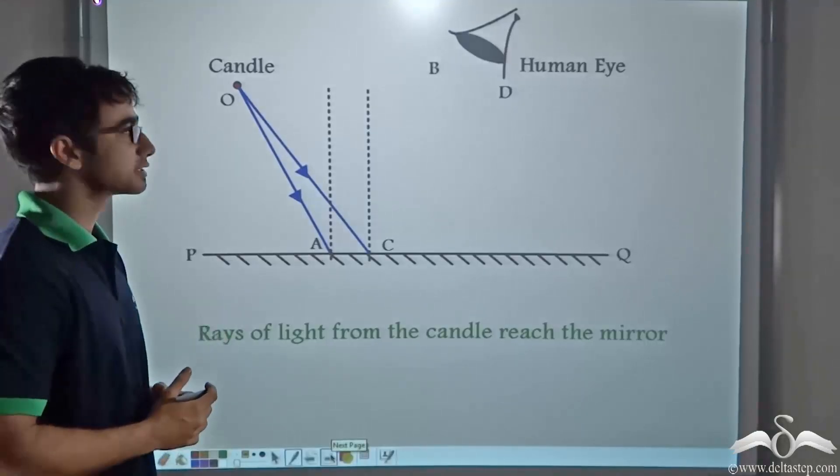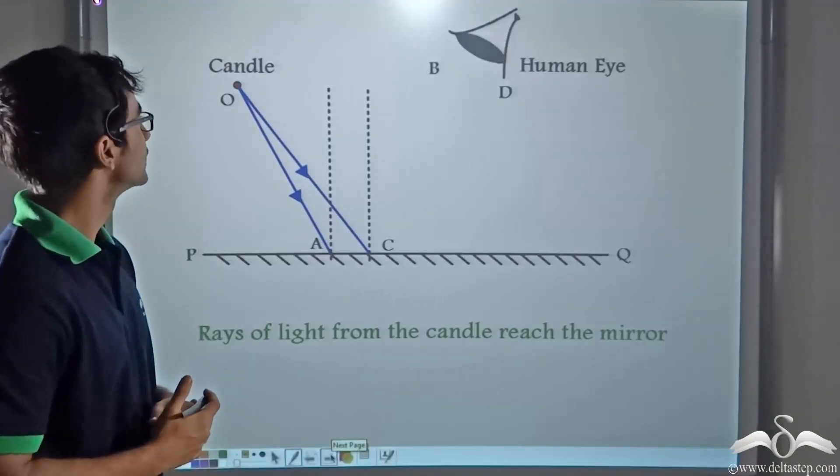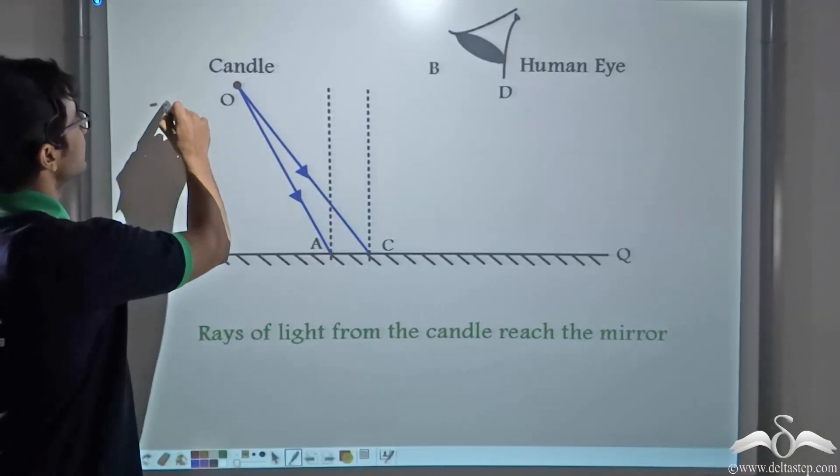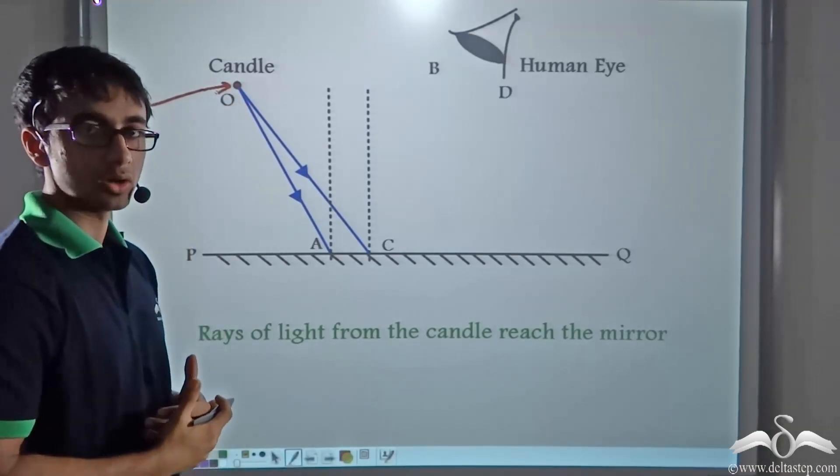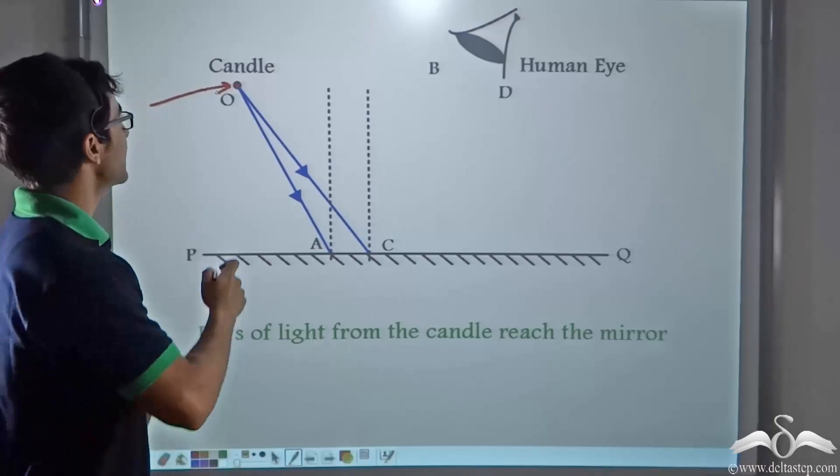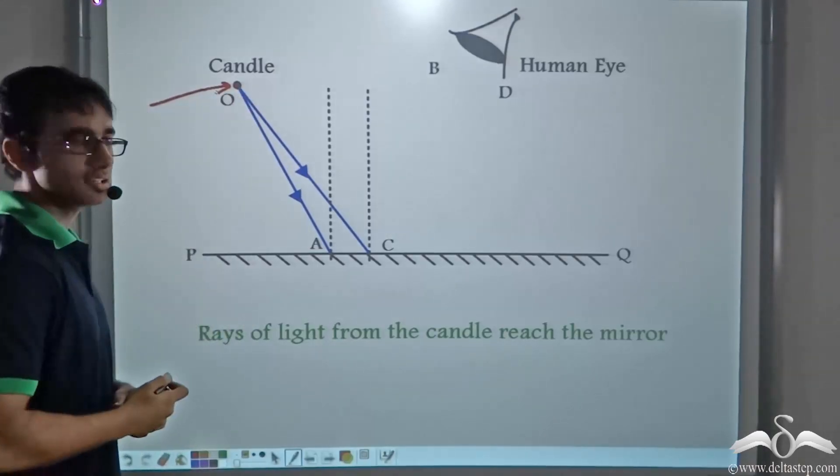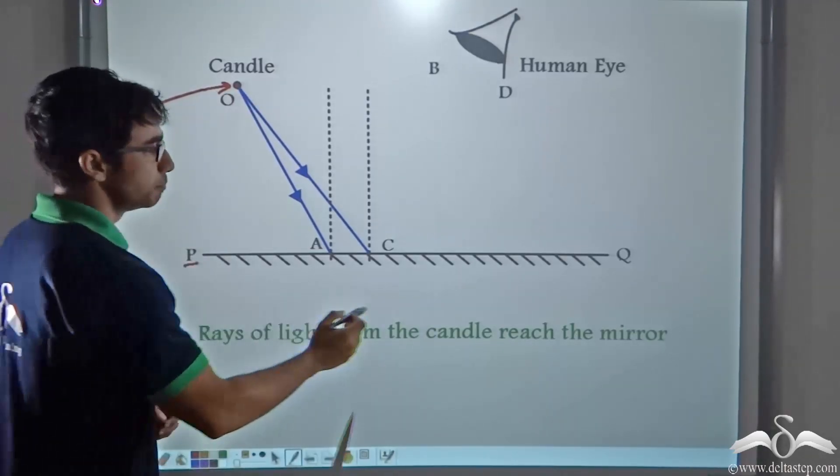Look at the diagram that has been represented on the board. Here the candle is represented by this circle. So what we are going to try and do now is obtain an image for this candle on the mirror PQ.